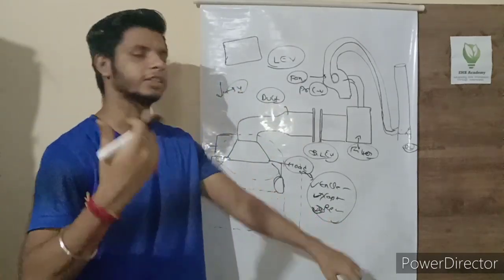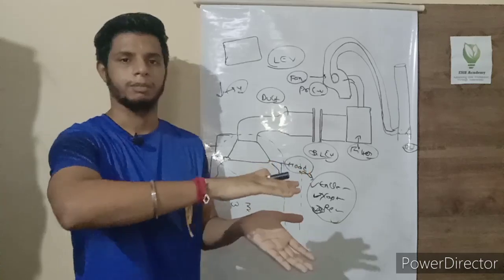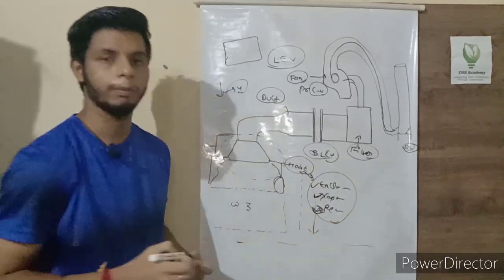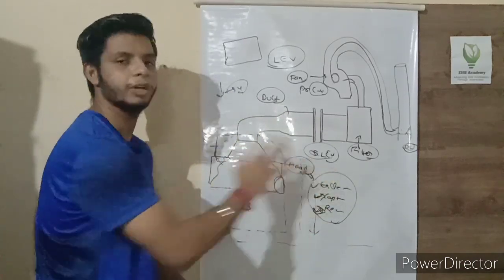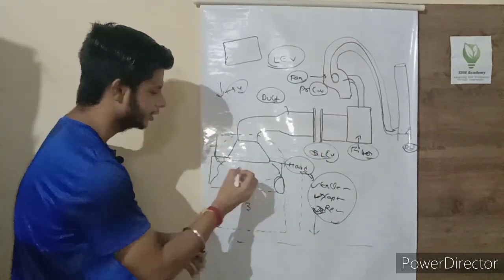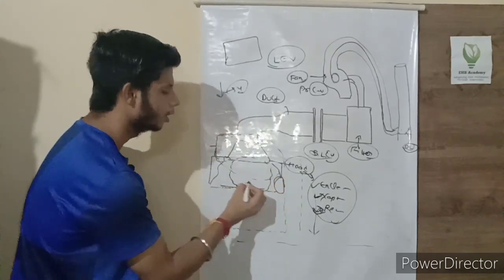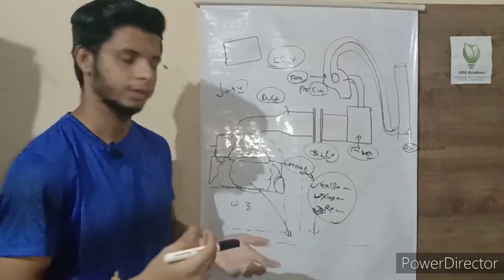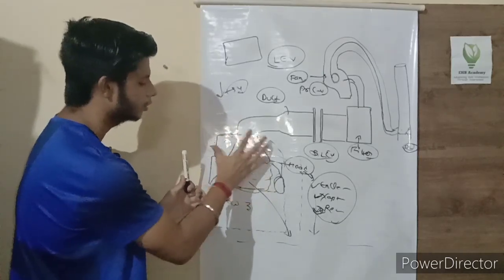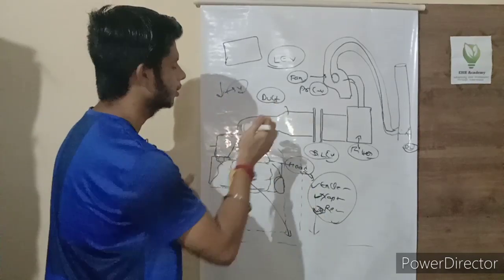A capturing hood is fixed at a static position — it will not move from its intended location; you bring your work to it. A receiving hood (also called a recapturing hood) can be moved in any direction based on your work — for example, moved to floor level if needed. The hood collects whatever contaminant cloud is generated at the workstation. You can visualize the cloud movement using a Tyndall lamp to check how effectively the hood is capturing contaminants.